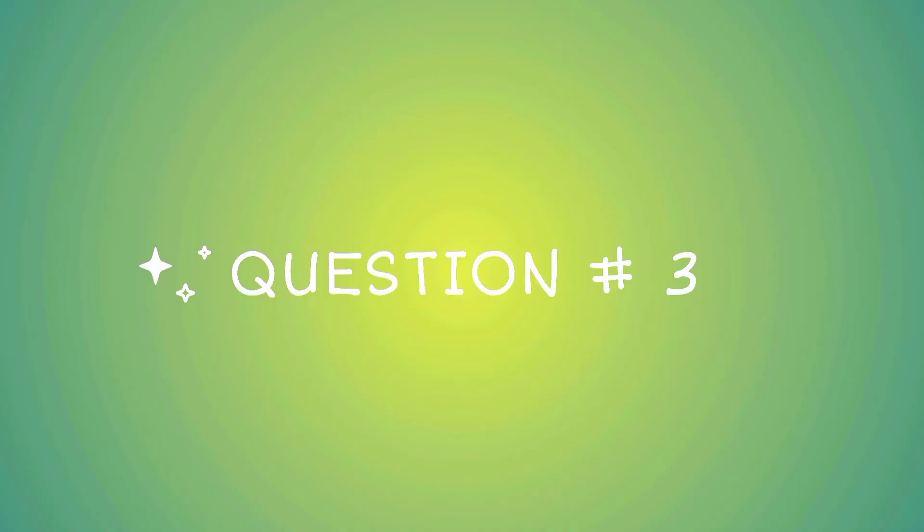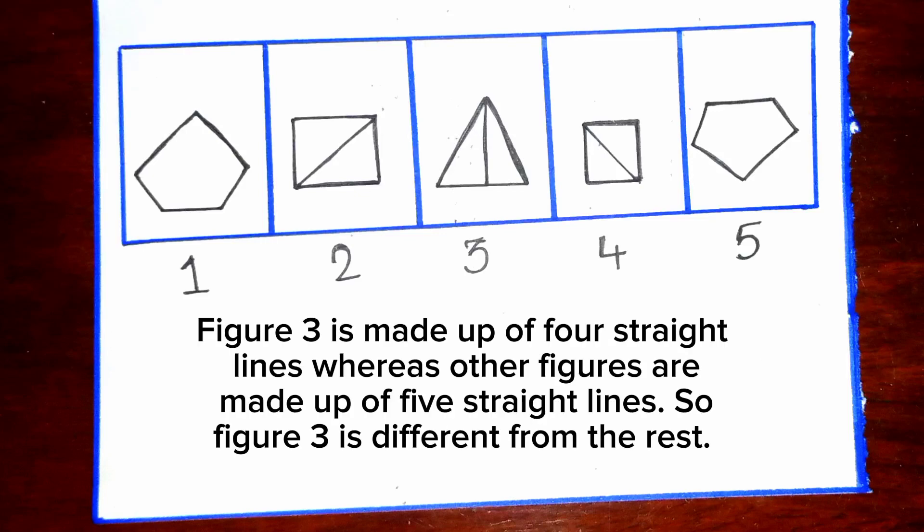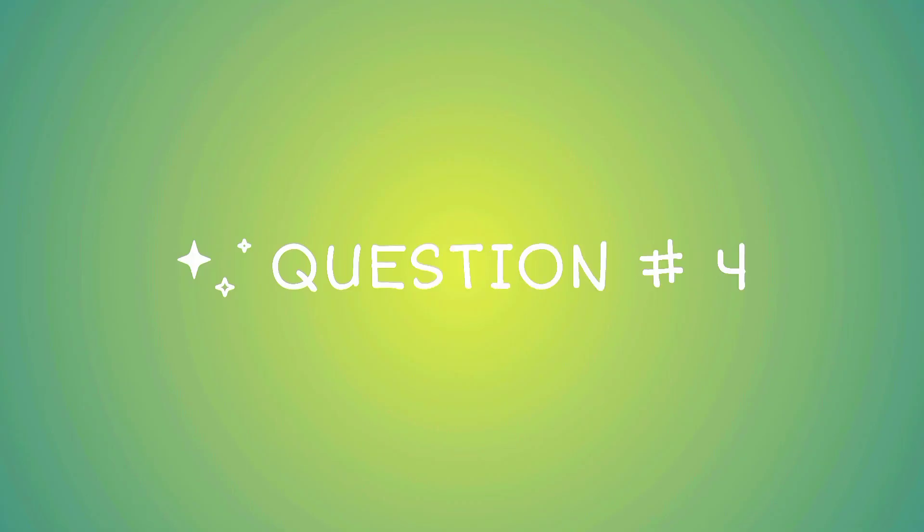Question number three. Figure three is made up of four straight lines, whereas other figures are made up of five straight lines. So figure three is different from the rest. Question number four.